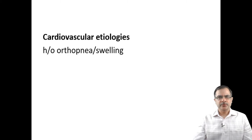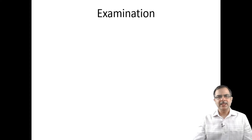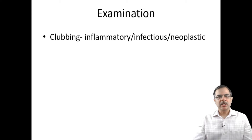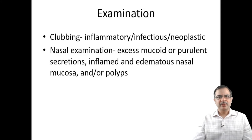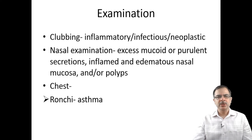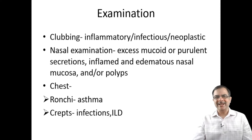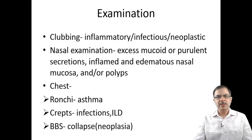For cardiovascular etiology, there will be a history of swelling, orthopnea, and PND. On examination, we look for clubbing in the general physical exam — if present, it suggests inflammatory causes like interstitial lung diseases, chronic tuberculosis, or CA lung. In nasal examination, look for mucoid or purulent secretions or nasal polyps. On chest examination, rhonchi suggest asthma, crepitations suggest infections or ILD, and bronchial breath sounds suggest collapse seen in neoplasia.